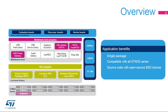Embedded software is delivered by series, such as STM32G0 and STM32L4, and common modules are covered with fully portable APIs. Embedded software initialization code can be generated through STM32CubeMX, allowing the customer to remain focused on the core application code.